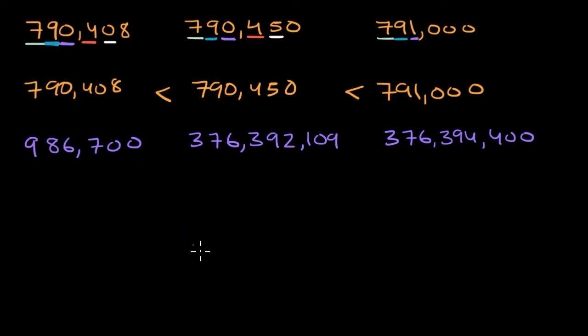Now let's do these numbers here. So it might be tempting to look at the first digit and say, oh, I have a nine there and then I have a three and a three. Nine is bigger than three. This must be the largest number. But then you have to be careful. You have to look at place value. If we pay careful attention, this nine is in a much less significant place.